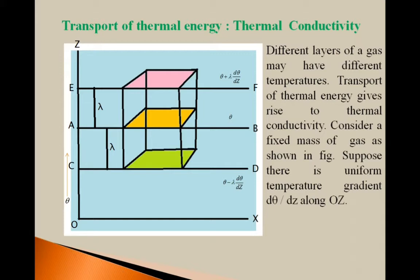Now consider a fixed mass of gas as shown in the figure. Along the z-direction, temperature is taken. There are three different layers for study: layer AB is at temperature θ; layer EF is at temperature θ + λ(dθ/dz); and layer CD is at temperature θ − λ(dθ/dz). Layer EF above AB has higher temperature than layer CD below AB.